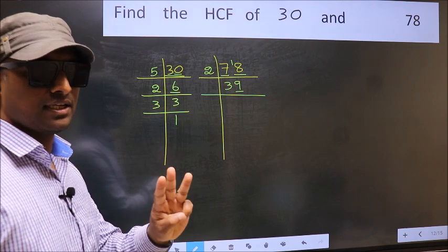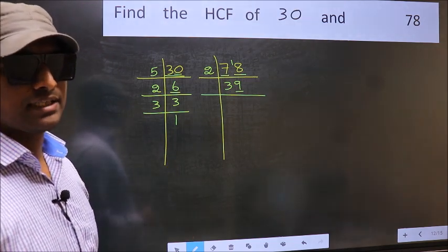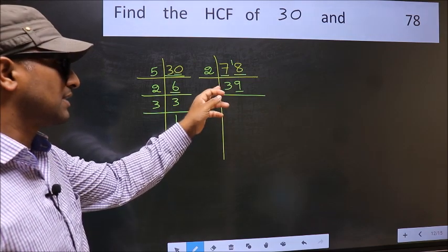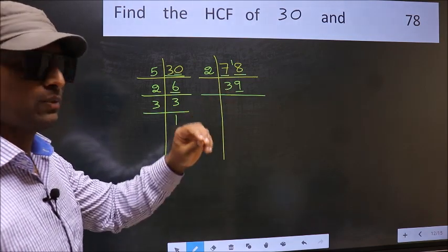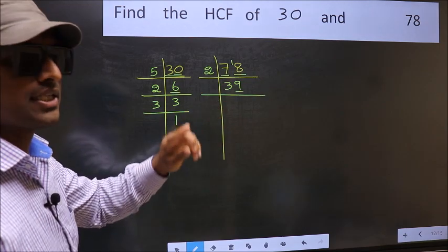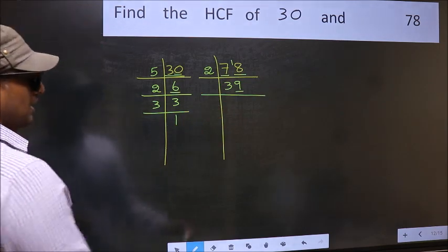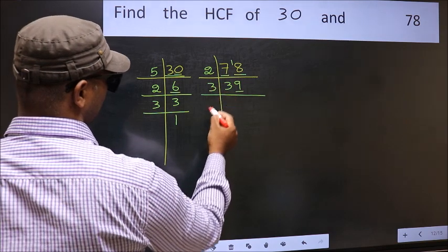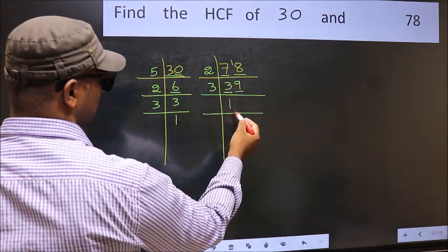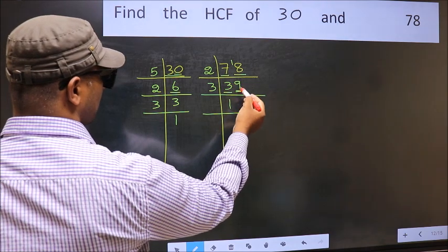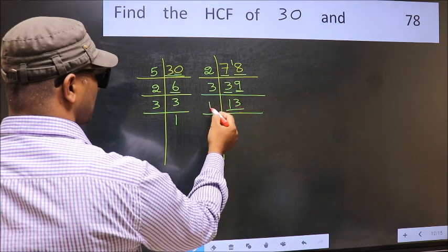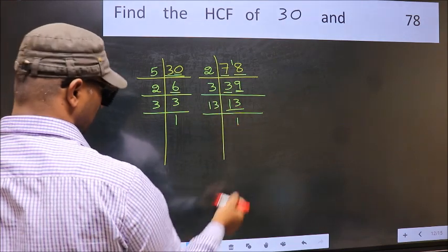Next prime number is 3. To check divisibility by 3, add the digits: 3 plus 9 gives 12, and 12 is divisible by 3. So this number is also divisible by 3, so take 3. First number 3 — when do we get 3 in the 3 table? 3 ones are 3. The other number is 9 — when do we get 9 in the 3 table? 3 threes are 9. Now 13 is a prime number, so 13 times 1 is 13.